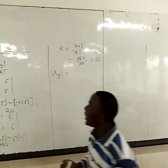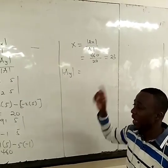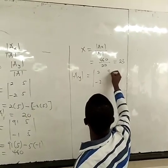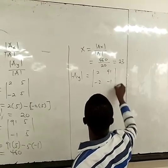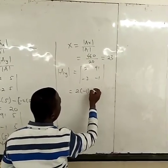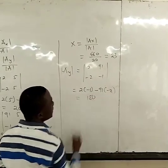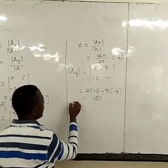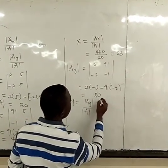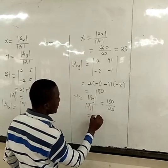Now I'm also going to find y. The matrix Ay is obtained by replacing the second column of the coefficient matrix with the constant matrix. So we have [2, 91; -2, -1]. Finding the determinant: 2 times negative 1 minus negative 2 times 91 equals negative 2 plus 182, which gives 180. Then y equals 180 over 20, and our answer is 9.